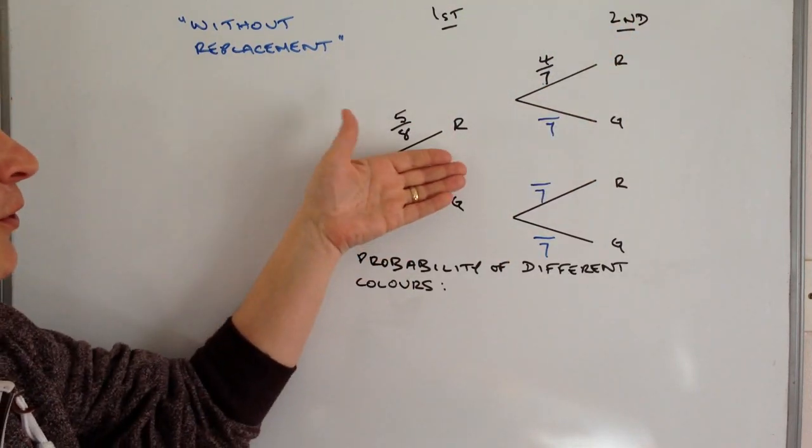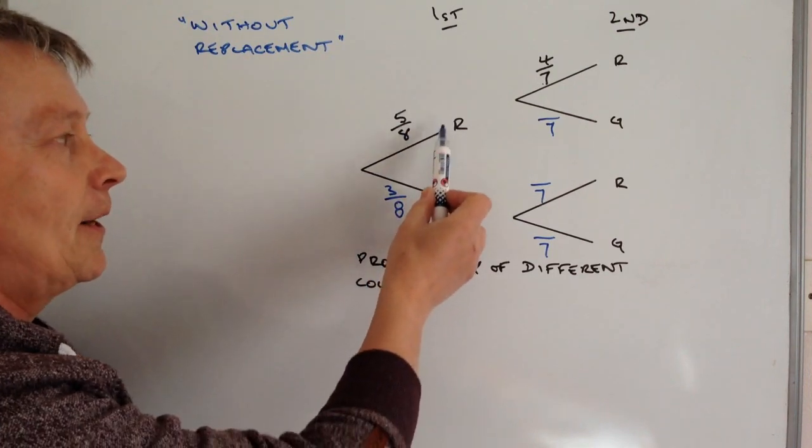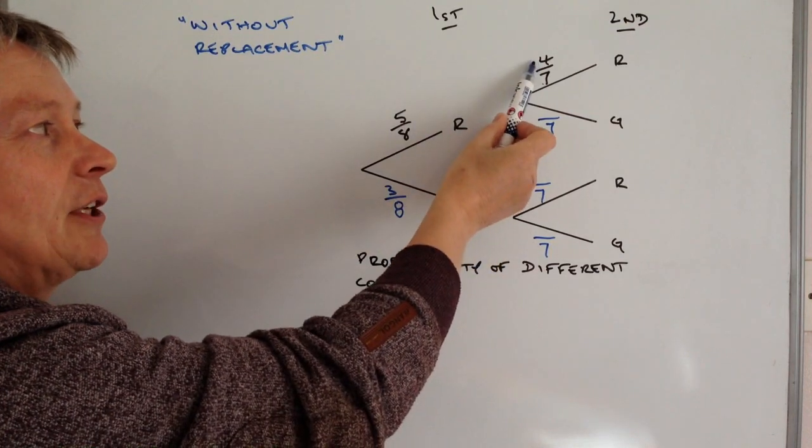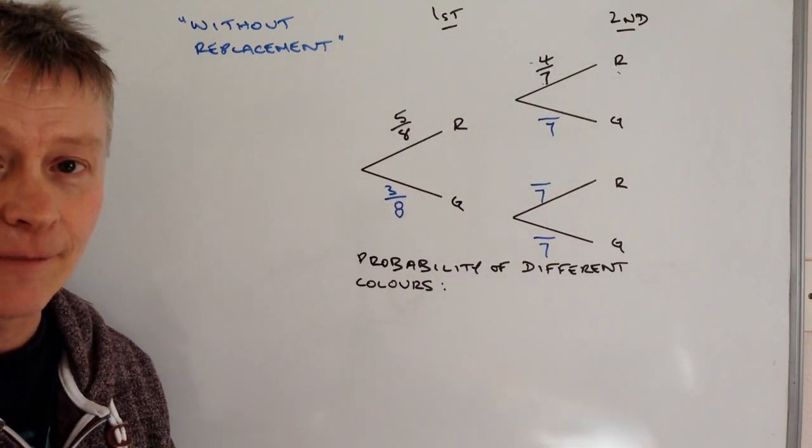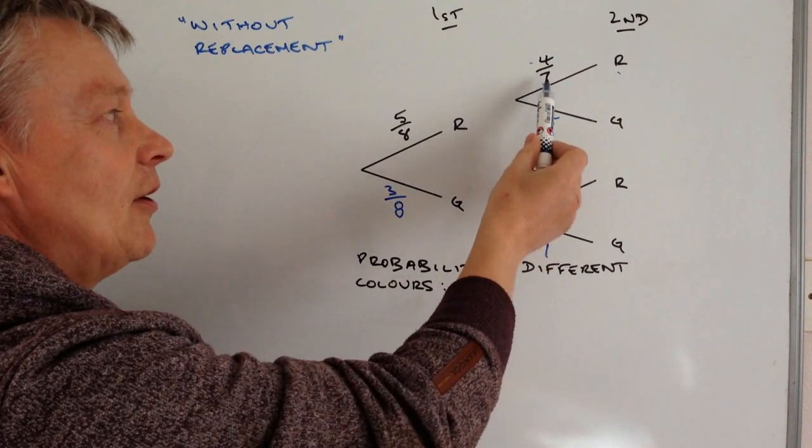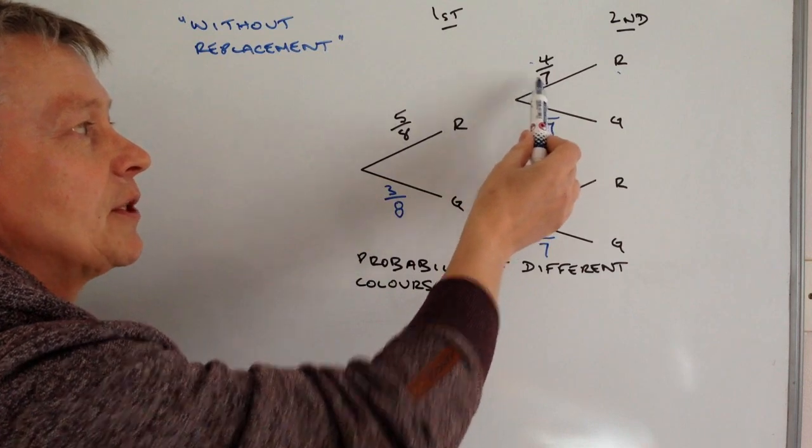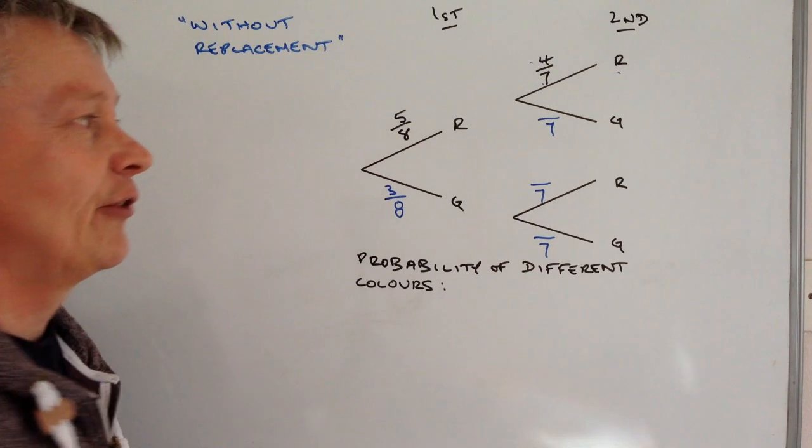Well you've got to kind of ignore this, but if you can imagine that now the first time around he takes a red marble which means he's only got four red marbles left in the bag. So out of the seven he's got, he's picked out of the eight he had originally, he's picked one, which means there's now seven and it also means that there were five, there's now four.